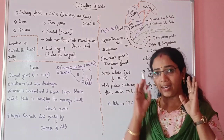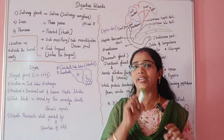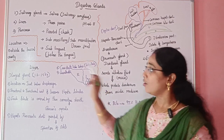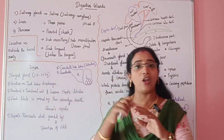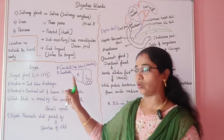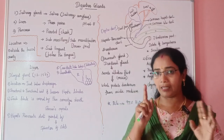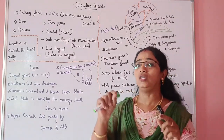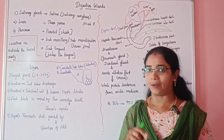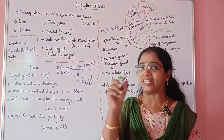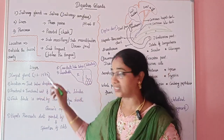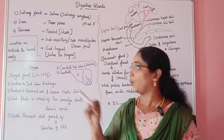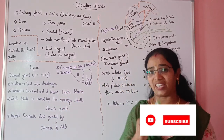The next gland is the liver. The liver is the largest gland in the body. Its weight is approximately 1.22 to 1.5 kg.